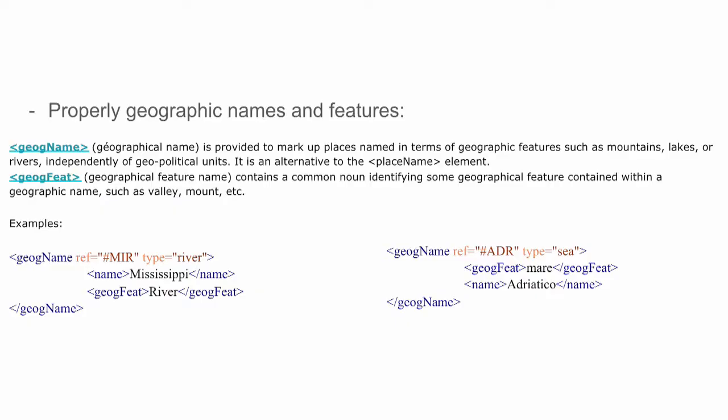We can give a description using properly geographic names. For instance, if you were describing the Mississippi River or the Mare Adriatico, there is no political element there — no bloc or country that would be relevant. You can use the Geog name and Geog feat elements to describe this purely geographic name. That is, Geog name will contain the name Mississippi and Geog feat will be River.